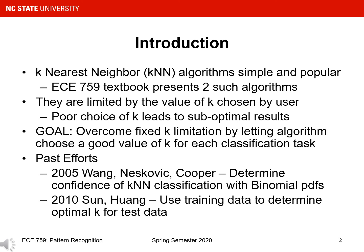A limitation of traditional k-nearest neighbors algorithms is that they use specific values of k chosen by the user, and a poor choice of k can lead to suboptimal classification results. The goal of my adaptive KNN algorithm is to overcome this fixed k limitation by letting the algorithm change to choose a good value of k for each classification task.